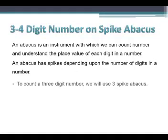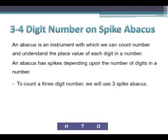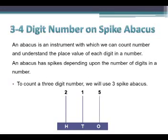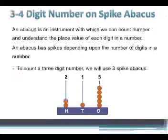To represent a 3 digit number we will use 3 spikes. Suppose we have the 3 digit number 215. We will have 3 spikes representing the 1s place, 10s place, and 100s place. According to the digits, we will put 5 beads at the 1s place, 1 bead at the 10s place, and 2 beads at the 100s place.